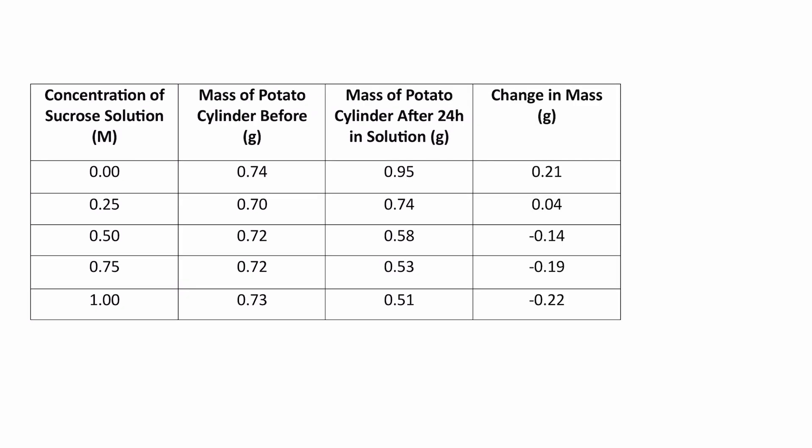To calculate the change in mass, we take away the mass of the potato cylinder before from the mass of the potato cylinder afterwards. So in the first one, we would take away 0.74 from 0.95 and it would give us 0.21.